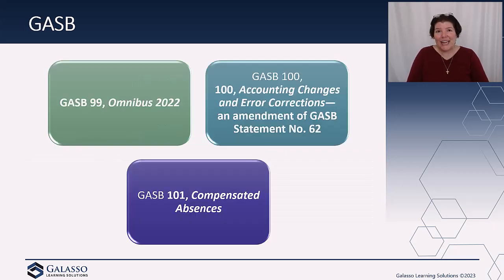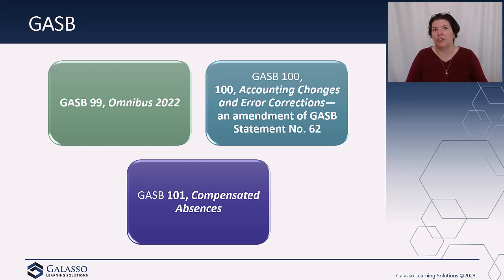GASB only had three standards, which is typical. GASB had gone through a period where they were issuing quite a bit, but they have some really large changes they're working on — revenue and expense recognition and the financial reporting model. So we had a little bit of a slower 2022 for GASB.